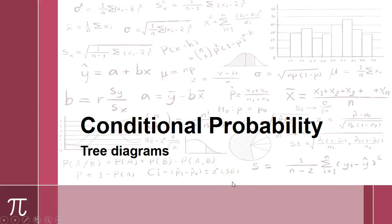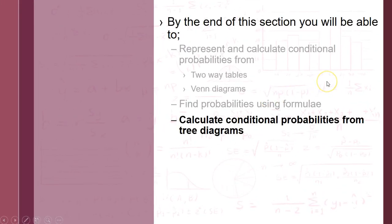Hi and welcome to this third video on conditional probability from the year two stats course. In this video we are looking at tree diagrams. We've already done stuff in the previous video on Venn diagrams and two-way tables. The subtle distinction here is that the previous video was about a single event with two categories, whereas with tree diagrams we're talking about two-event probability — one thing happening followed by another thing happening.